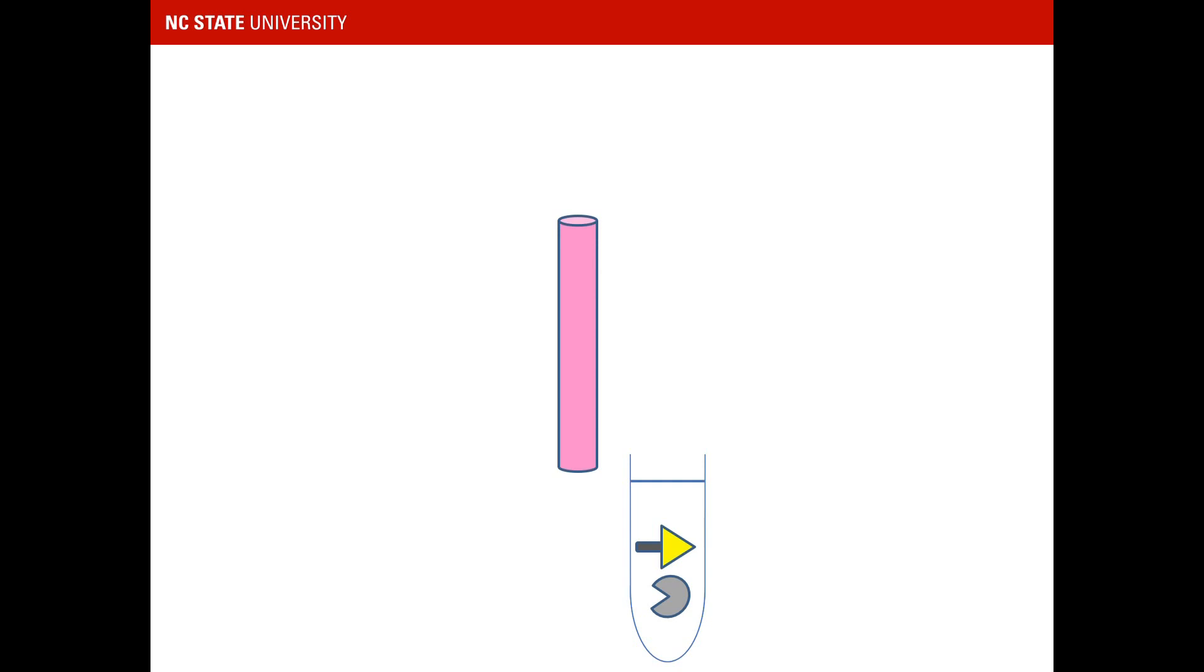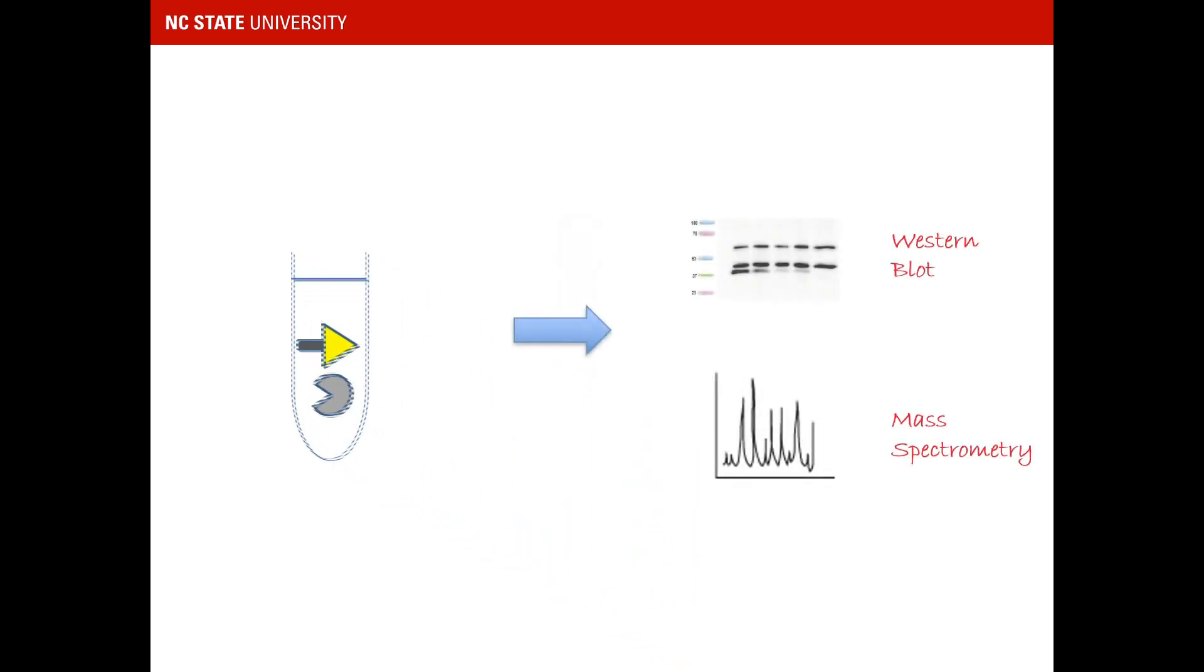Through analysis using Western blot or mass spectrometry, a predicted protein-protein interaction can be confirmed, or an unknown interaction can be detected.